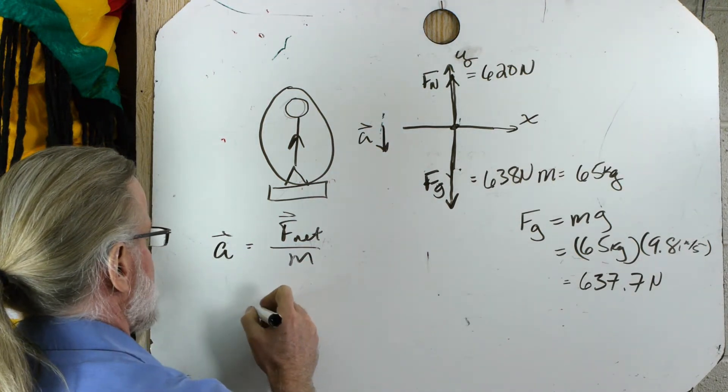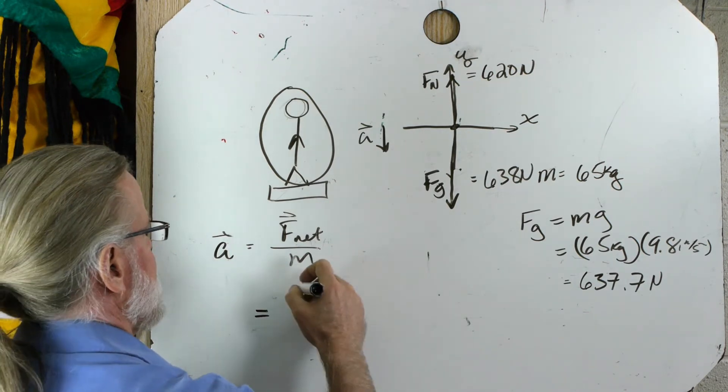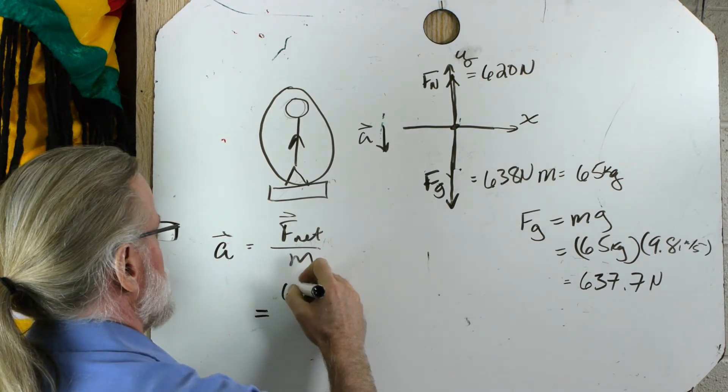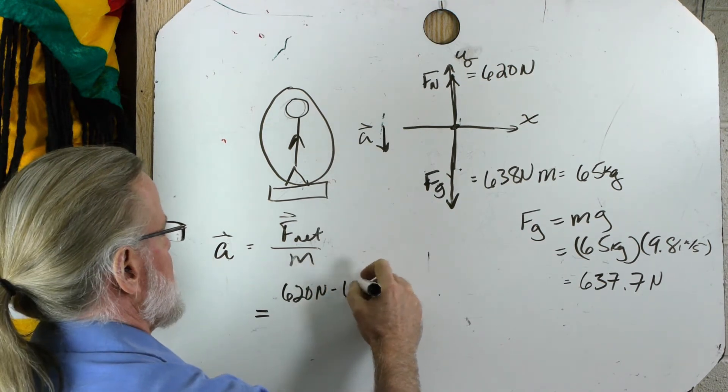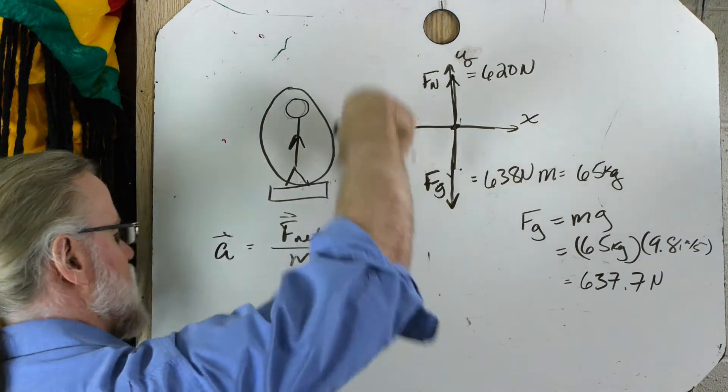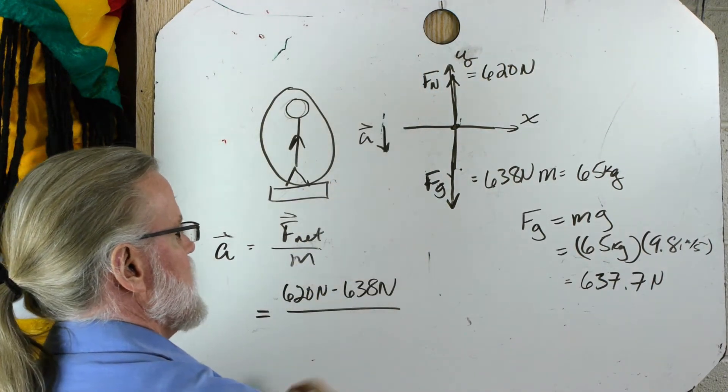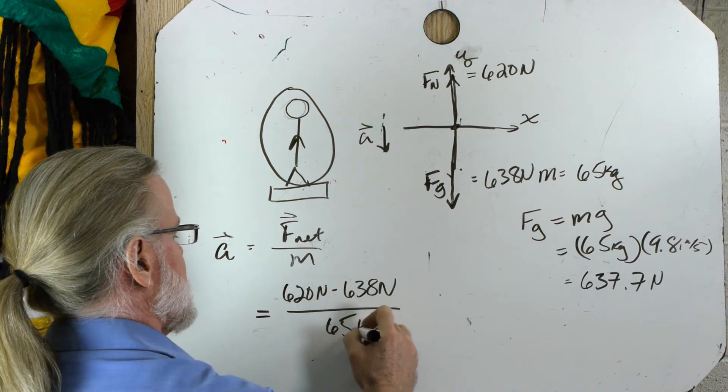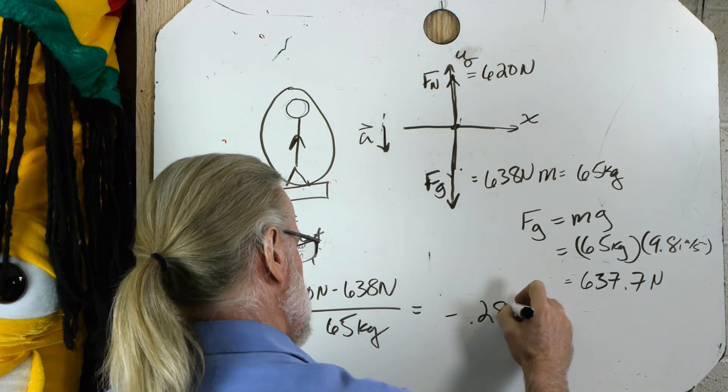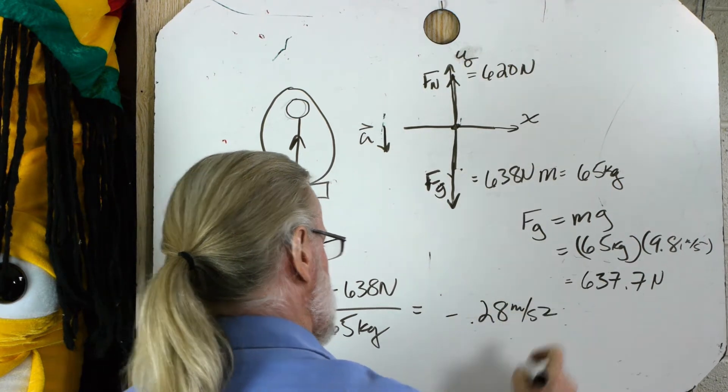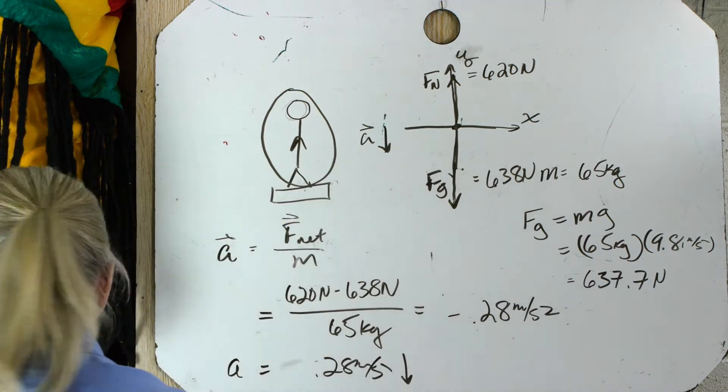Let's calculate acceleration equals Fnet. Fnet equals 620 newtons minus 638 newtons. We had 620 up, 638 down, divided by the mass, which is 65 kilograms, minus 0.28 meters per second squared downward. And we expected it to be downward, and that's a good thing.